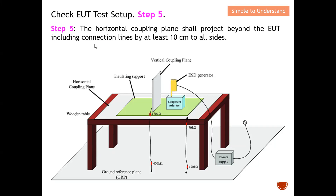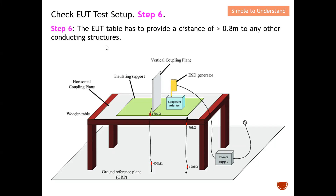Step number six: the EUT table must provide a distance of 0.8 meters to any other conducting structure. Anything that is conductive must be at least 0.8 meters away from your EUT table in order to comply with this step.